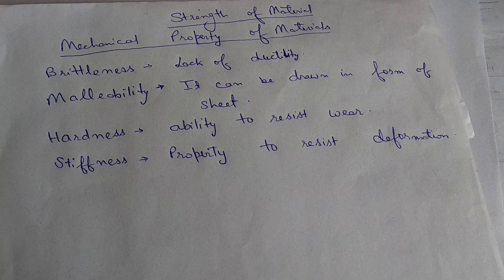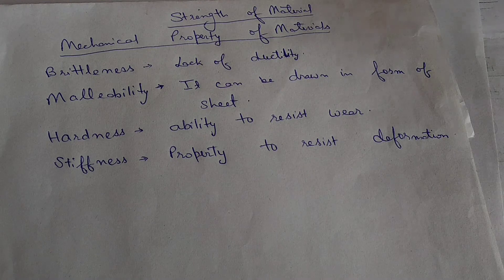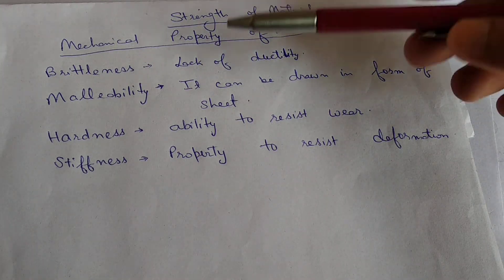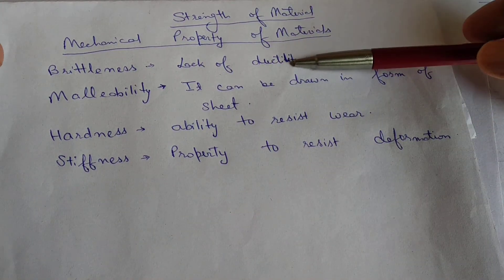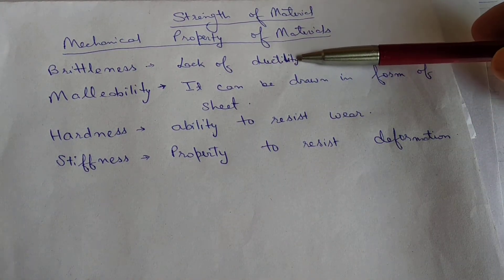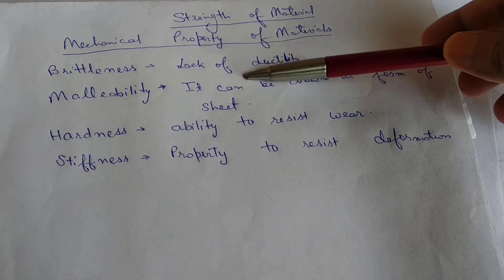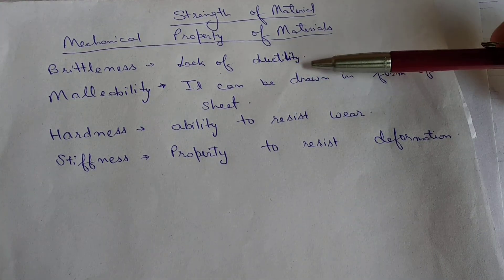Today we will discuss various mechanical properties of material. First is brittleness. What is brittleness? Brittleness is the property of an object to break. There is a lack of ductility.